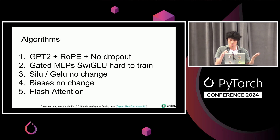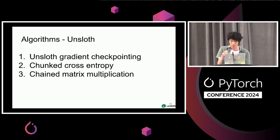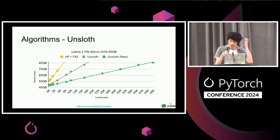For other algorithms: GPT-2 plus RoPE plus no dropout is very useful. Gated MLPs and SwiGLU are actually hard to train according to the paper, so if you're training a larger model it's not that bad. Different activation functions don't really change accuracy; biases don't really do anything. You must use flash attention. In Unsloth, we have Unsloth gradient checkpointing, which offloads activations to system RAM asynchronously — this only increases training time by about 1 to 2%. Chunked cross entropy is also very good, and chain matrix multiplication actually reduces real FLOPs without reducing accuracy if you bracket correctly. Using Unsloth gradient checkpointing gives you much lower memory usage and enables long-context fine-tuning.